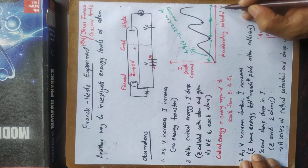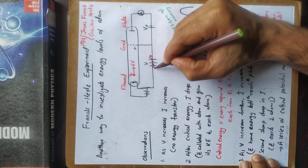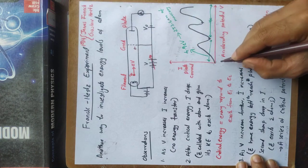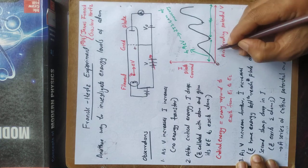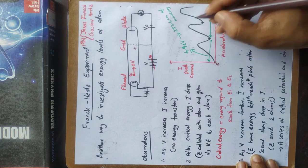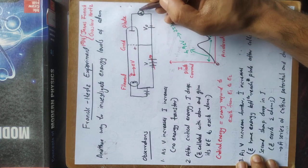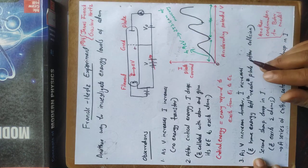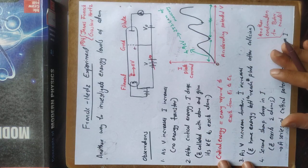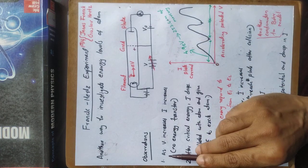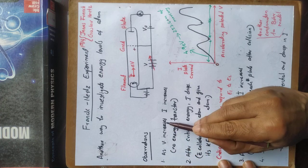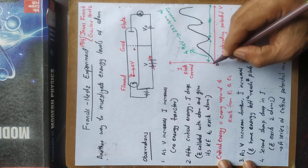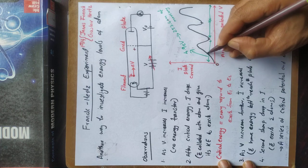We observe a graph of accelerating potential versus plate current. As V increases, I increases. As the accelerating potential increases, the plate current also increases.